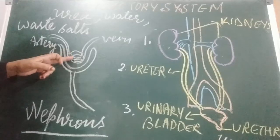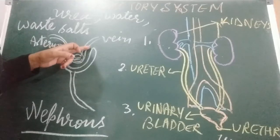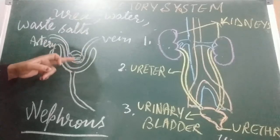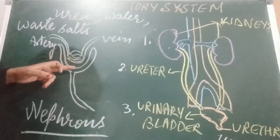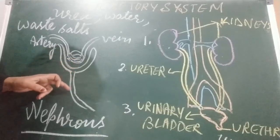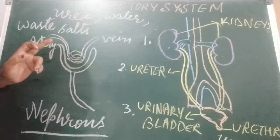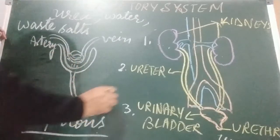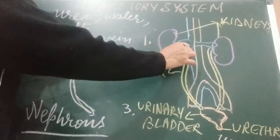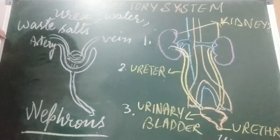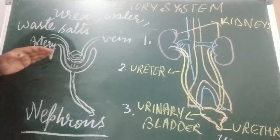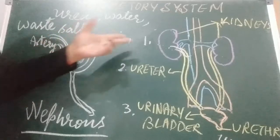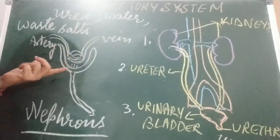The useful substances are absorbed back into the blood, and the waste products dissolved in water are removed from the kidneys as a yellowish liquid called urine. The uric acid and other waste are filtered and pass through the tube to the ureter. The nephron acts as a filter and removes harmful substances. Millions of nephrons act as filters to remove harmful substances.